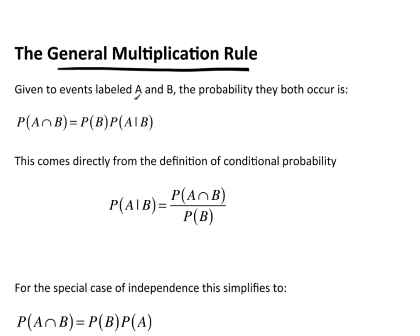Given two events labeled A and B, the probability that they both occur, this is a joint probability, is given by the probability of B times the probability of A given B.